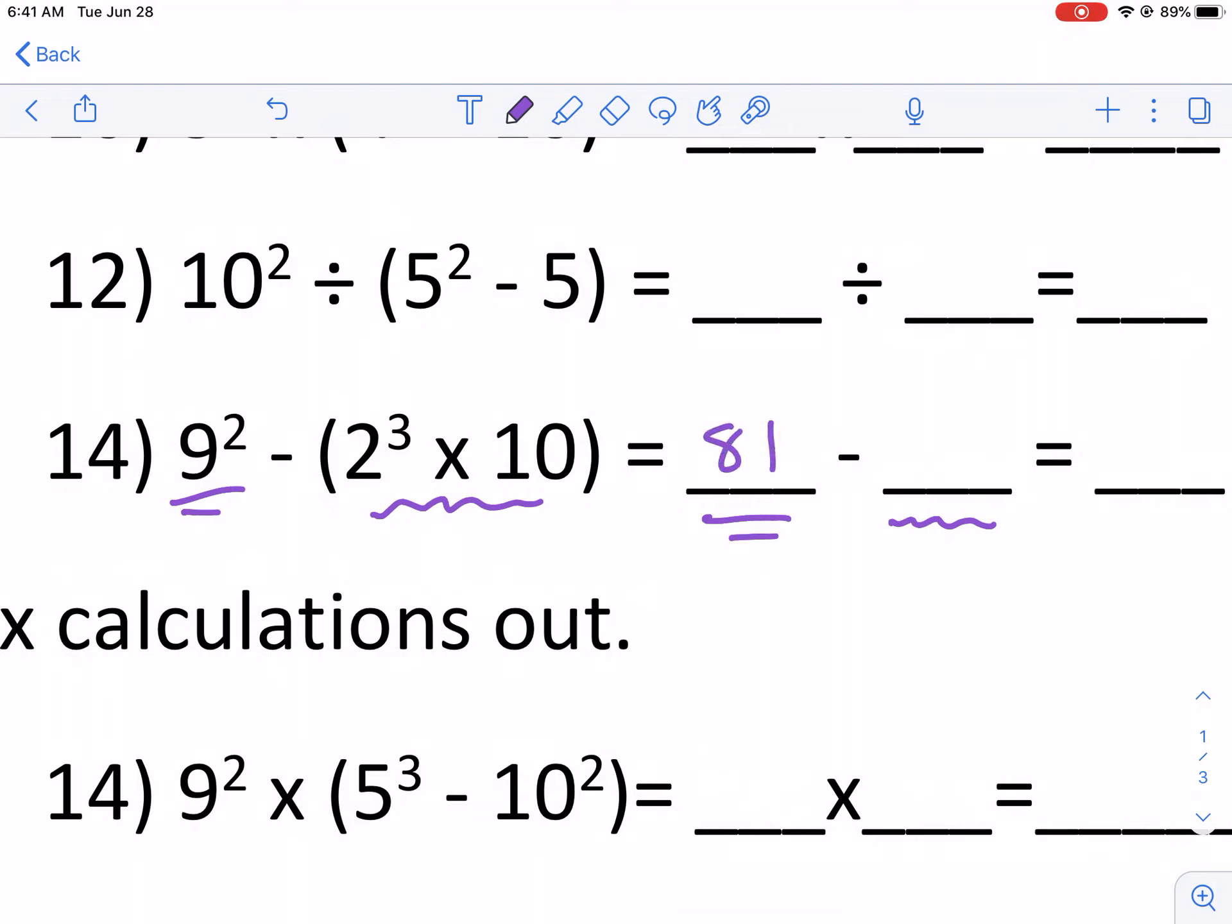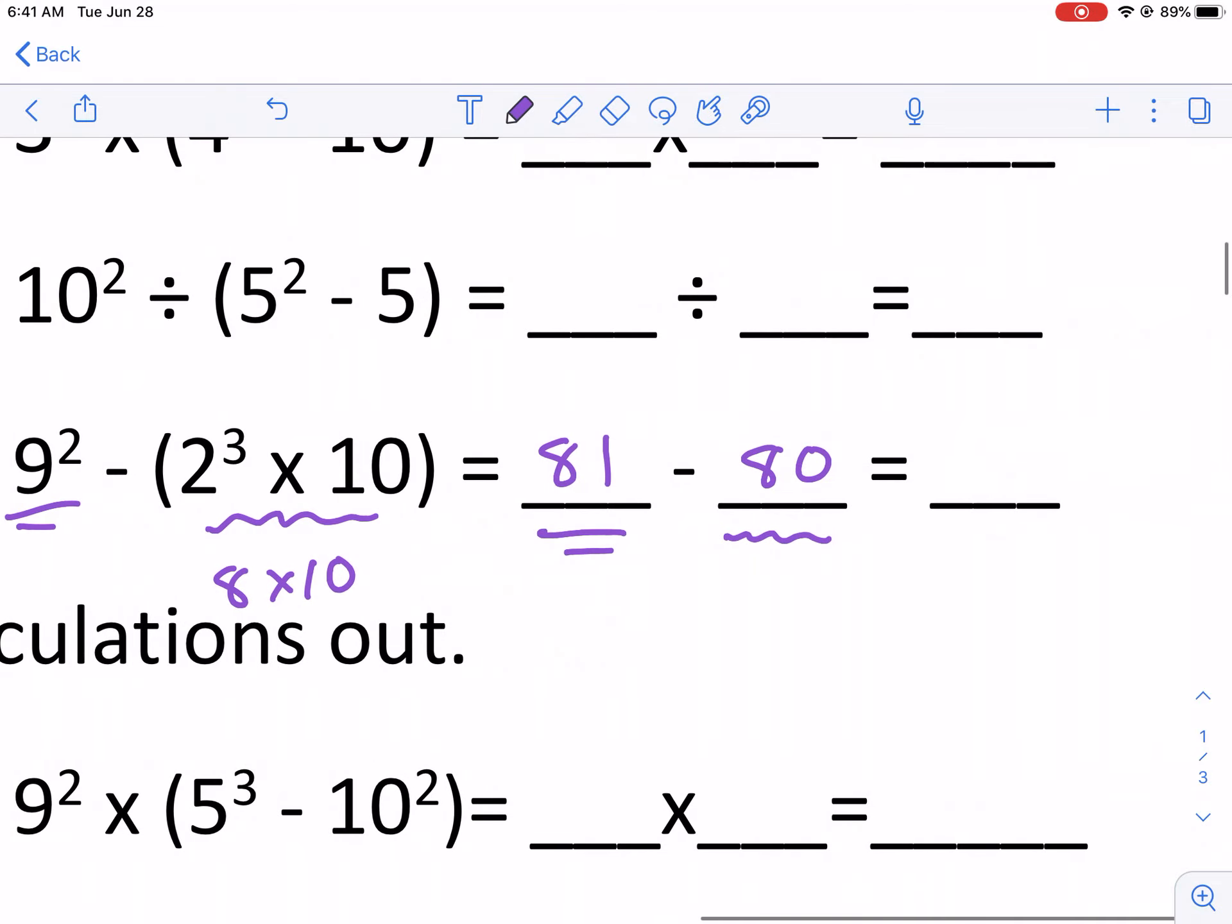And now I have to do this exponents and multiplication. Exponents first, eight times 10. And I know that's 80. So I do 81 minus 80. And that is just one.